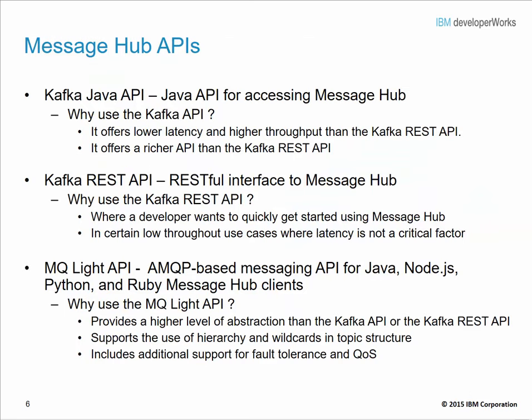MessageHub offers developers three APIs. The first is the Kafka Java API, which allows you to access MessageHub. The reasons you might want to use the Kafka Java API include very low latency and high throughput, especially compared to the Kafka REST API. It is also a much richer API, more tightly integrated with the overall Kafka architecture, and allows you to perform many low-level operations.